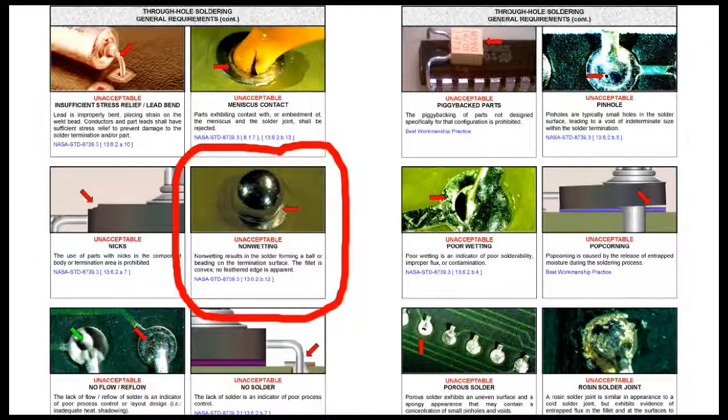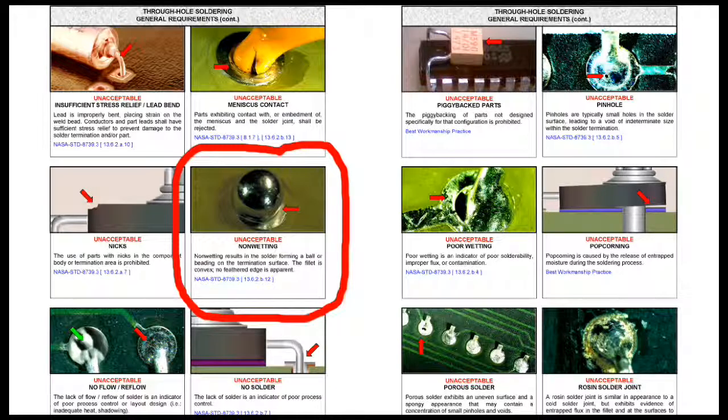When you feed solder into the soldering iron tip, or when a ground plane sucks all the heat out of the pad, or when a large component lead sucks all the heat out of the tip, you get a solder ball. Suck the solder off and start again.